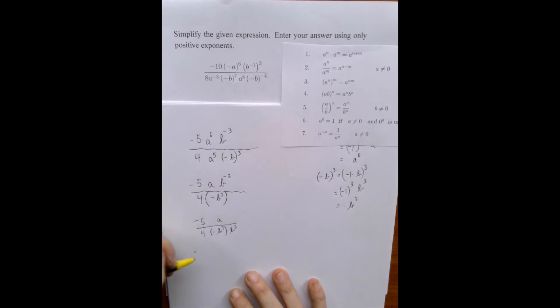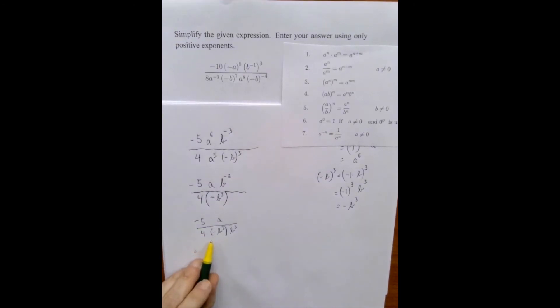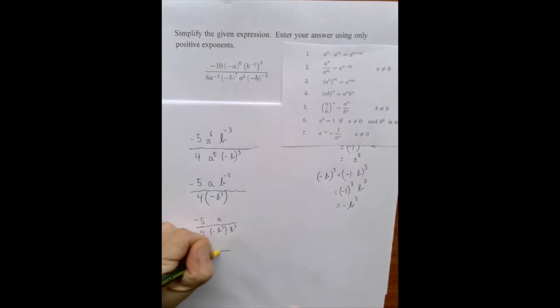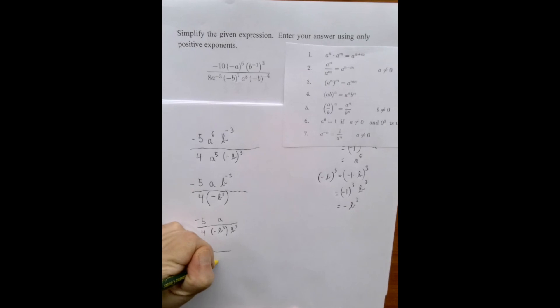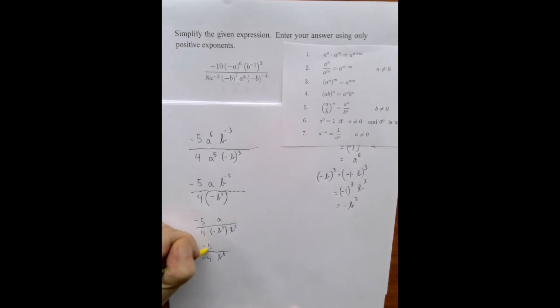The next thing I will do is, to get rid of the parenthesis as well, we're going to have negative 4 b cubed times b cubed. That's b to the 6 in the denominator and minus 5a in the numerator.